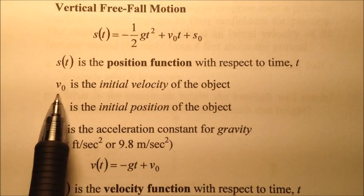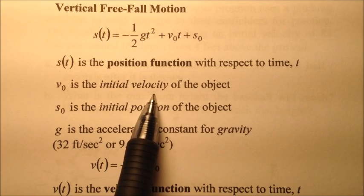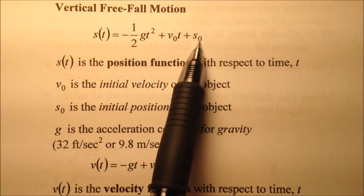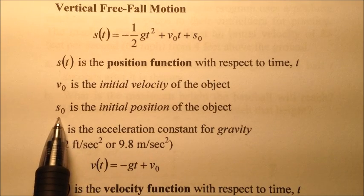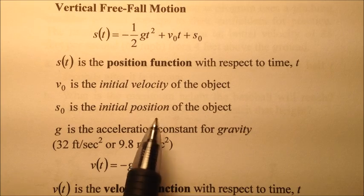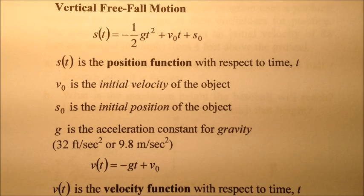v₀ is our initial velocity. Where do we start? In our case, it's 88 feet per second. s₀ is the initial position. We started 4 feet above the ground on our pitching machine.